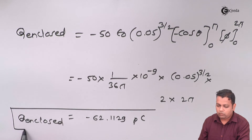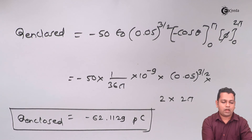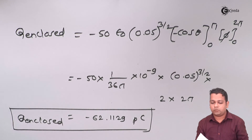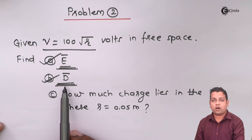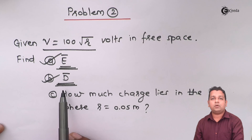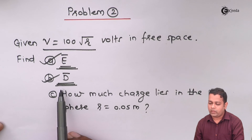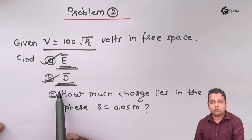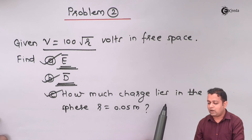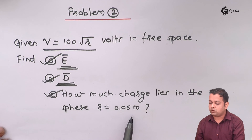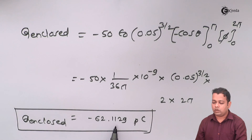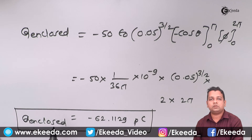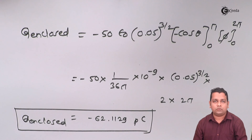This is the answer for part C. To summarize the three parts: part A gave us the electric field intensity vector, using which we solved part B for the electric flux density vector, and using the electric flux density we obtained the total electric flux leaving — which by Gauss's law equals the charge enclosed. The charge within the sphere of R = 0.05 meters is −62.1129 picocoulombs. Thank you.